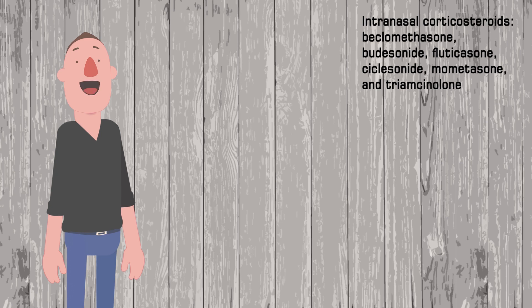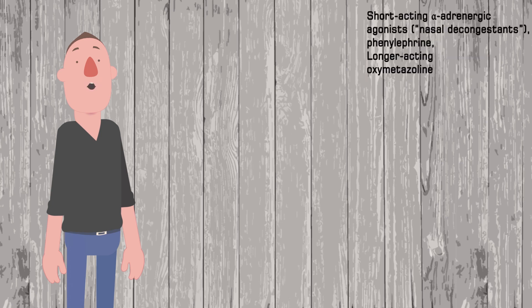For patients with chronic rhinitis, improvement may not be seen until one to two weeks after starting therapy. Short-acting alpha-adrenergic agonists, nasal decongestants like phenylephrine, constrict dilated arterioles in the nasal mucosa and reduce airway resistance. A longer-acting oxymetazoline is also available.